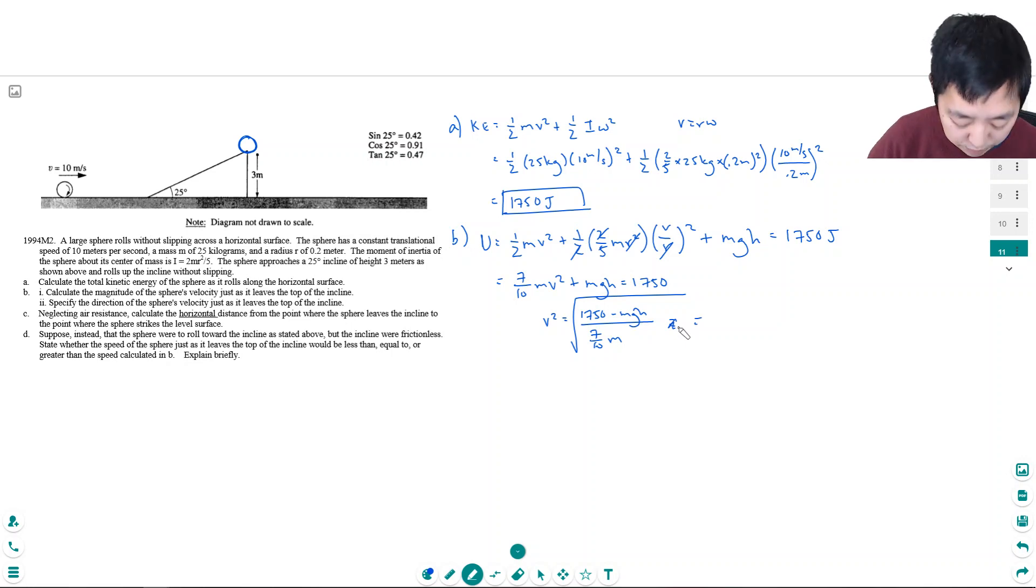Three meters is what I use for h. So 25 times 9.8 times 3. And then divide it by .7, which is seven tenths times 25. And then take the square root of that. So its velocity at the top would be 7.62 meters per second. So that's part one.